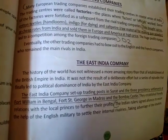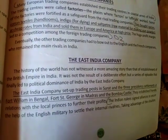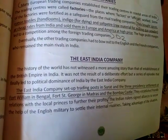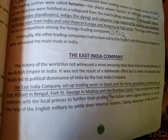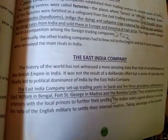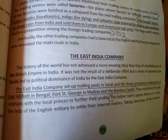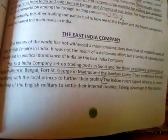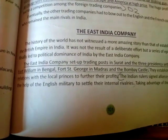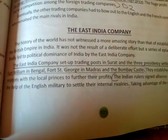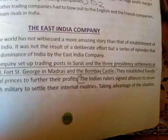The East India Company set up trading posts in Surat and three presidency settlements: Fort William in Bengal, Fort St. George in Madras, and the Bombay Castle. They started trading in Surat and chose these three areas for their settlements.